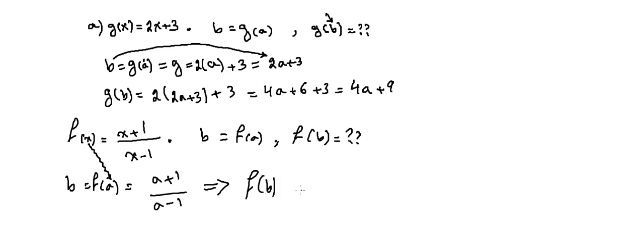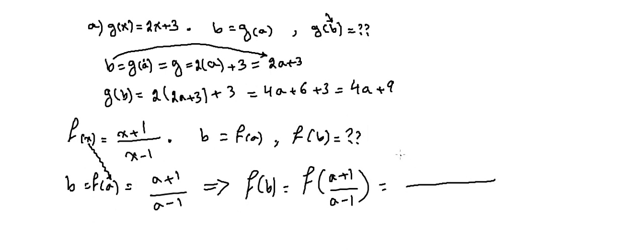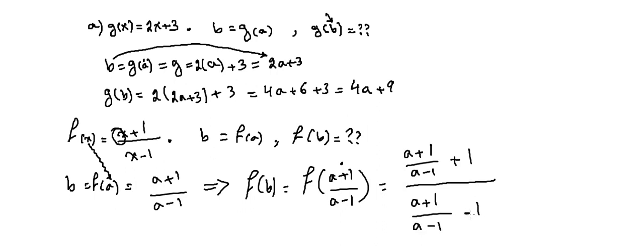Now we need to find F of B. We found B, so we substitute its value. F of B means F of (A plus 1) over (A minus 1). We take F of X but instead of X we substitute (A plus 1) over (A minus 1), both in the numerator — adding plus 1 — and in the denominator — subtracting minus 1.